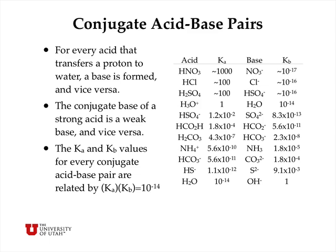A table of acids and bases organized as conjugate acid-base pairs shows that very strong acids like nitric acid and hydrochloric acid have very weak conjugate bases like nitrate and chloride ion. At the bottom of the table, strong bases like hydroxide and sulfide anion have very weak conjugate acids like water and HS⁻. The Ka and Kb values reflect this: very strong acids have very weak conjugate bases and vice versa. In fact, the product of Ka and Kb for each conjugate acid-base pair equals 10⁻¹⁴ at room temperature.